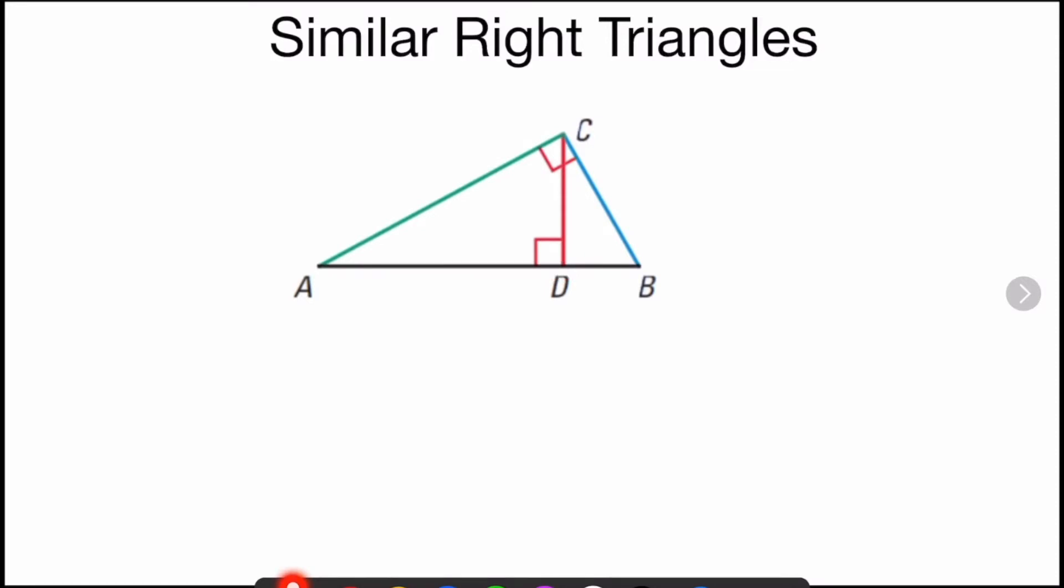When you do that, you're going to get three different triangles and they will all be similar. There is a small right triangle here, a medium sized right triangle here, and of course the bigger one there.